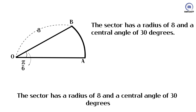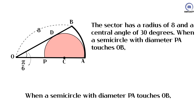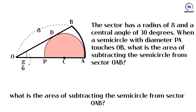The sector has a radius of 8 and a central angle of 30 degrees. When a semicircle with diameter PA touches OB, what is the area of subtracting the semicircle from sector OAB?